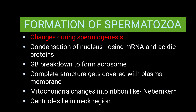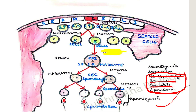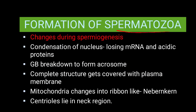Now let's see the formation of spermatozoa — what changes occur in spermatids during spermiogenesis. First is the condensation of the nucleus — the nucleus condenses. mRNA and acidic proteins are lost, and what remains is DNA and basic proteins.